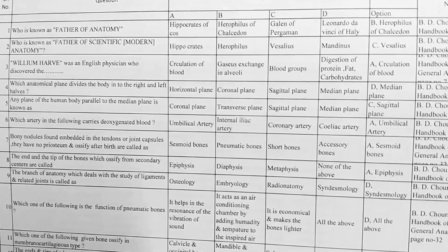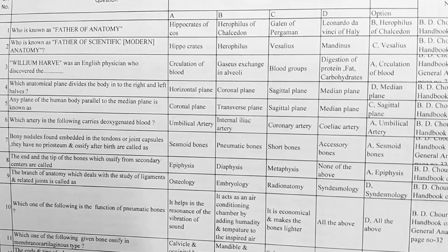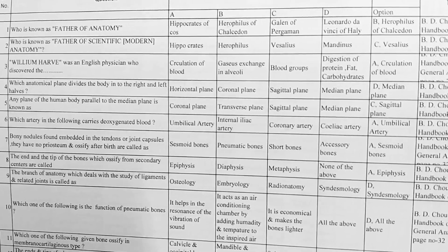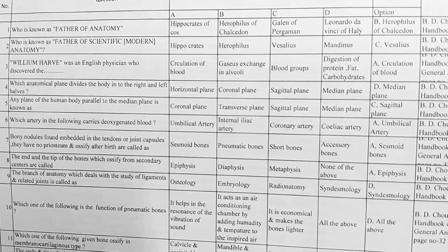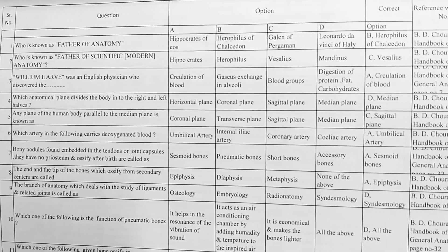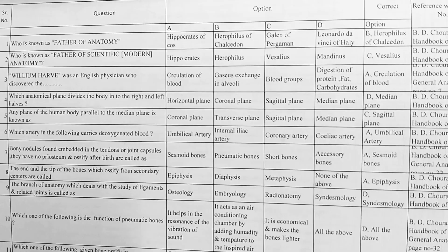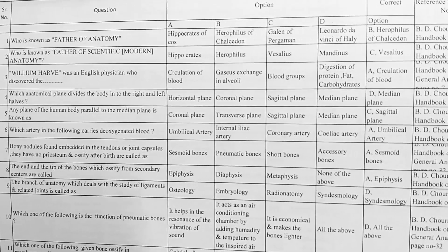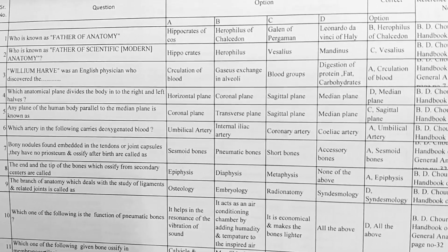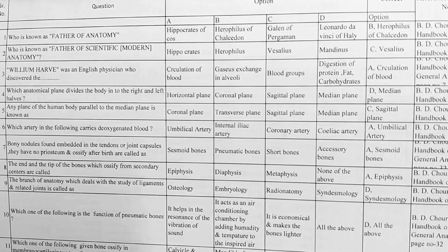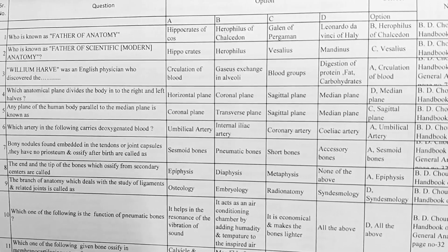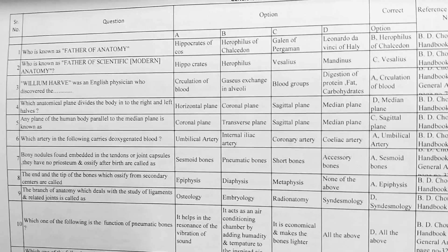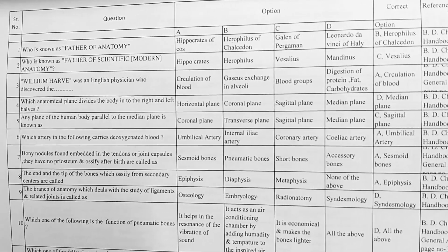Next, who is known as father of scientific modern anatomy? Options: A. Hippocrates, B. Herophilus, C. Vesalius, D. Mondinus. Correct option is C, Vesalius. Next, William Harvey was an English physician who discovered — options: A. circulation of blood, B. gaseous exchange in alveoli, C. blood groups, D. digestion of protein, fat, and carbohydrate. Correct option is A, circulation of blood.